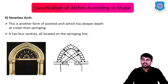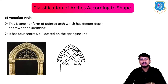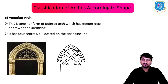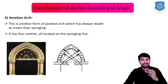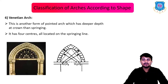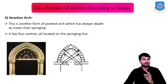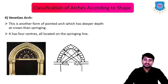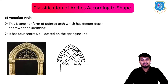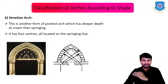Next is the Venetian arch, another form of pointed arch which has a deeper depth at the crown than at the springing. It has four centers, all located on the springing line — O1, O2, O3, and O4.